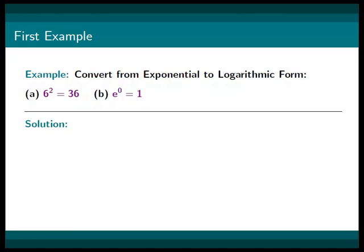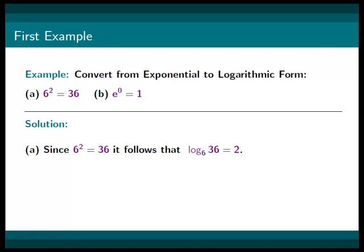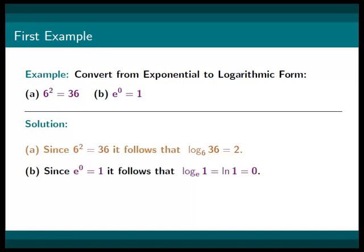In our first example, we are asked to convert from exponential to logarithmic form. We have 6 squared equals 36, and e to the power of 0 equals 1. Since 6 squared equals 36, it follows that log base 6 of 36 equals 2. And since e to the power of 0 equals 1, it follows that log base e of 1 equals natural log of 1, which is just 0. In conclusion, we have log base 6 of 36 equals 2, and natural log of 1 equals 0.